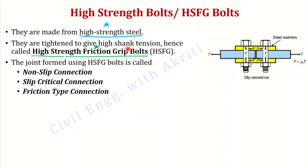They are tightened to give high shank tension, hence called high strength friction grip bolts. When you tighten the bolt by turning the nut, a tension is introduced in the shank. This tension force T exists in the shank. Because a force is already acting in the bolt itself — denoted as T, a tension in the shank — these are also called pre-loaded bolts.